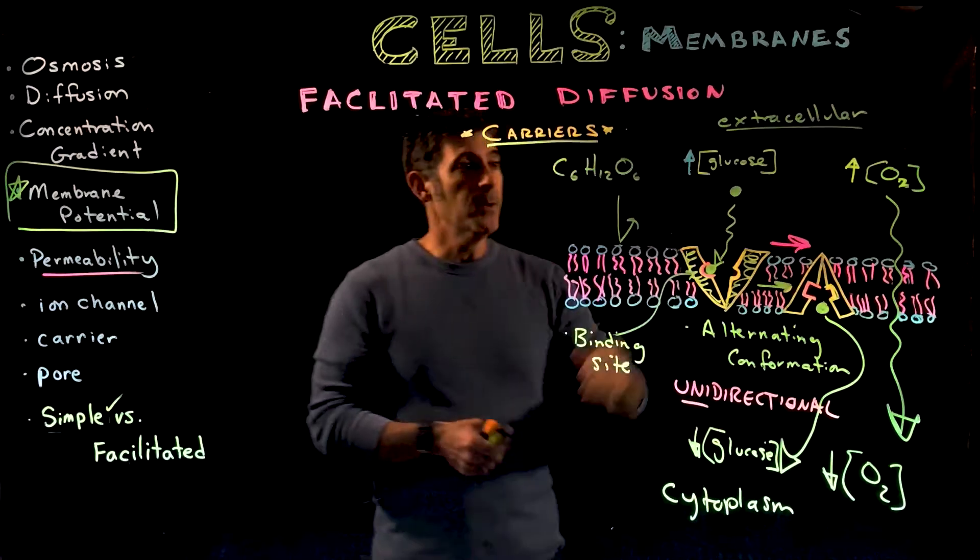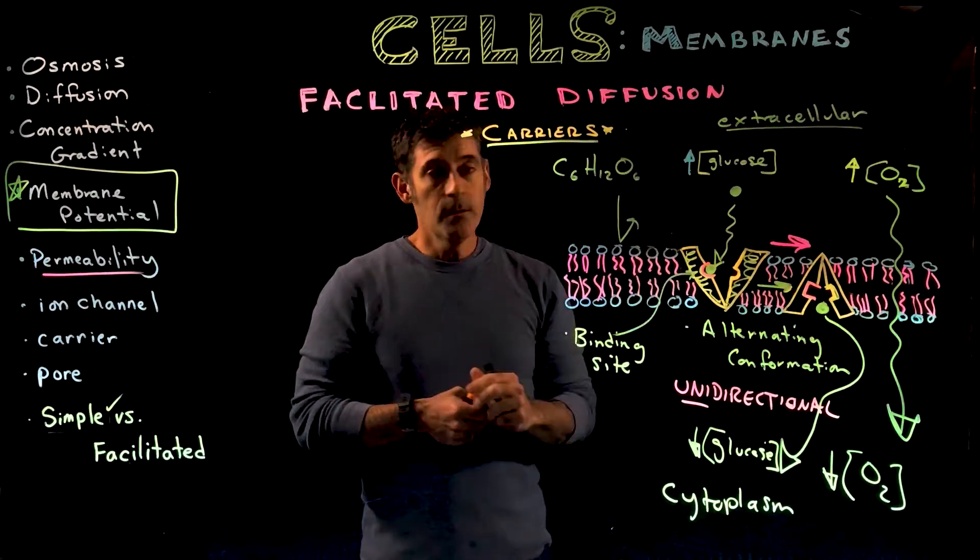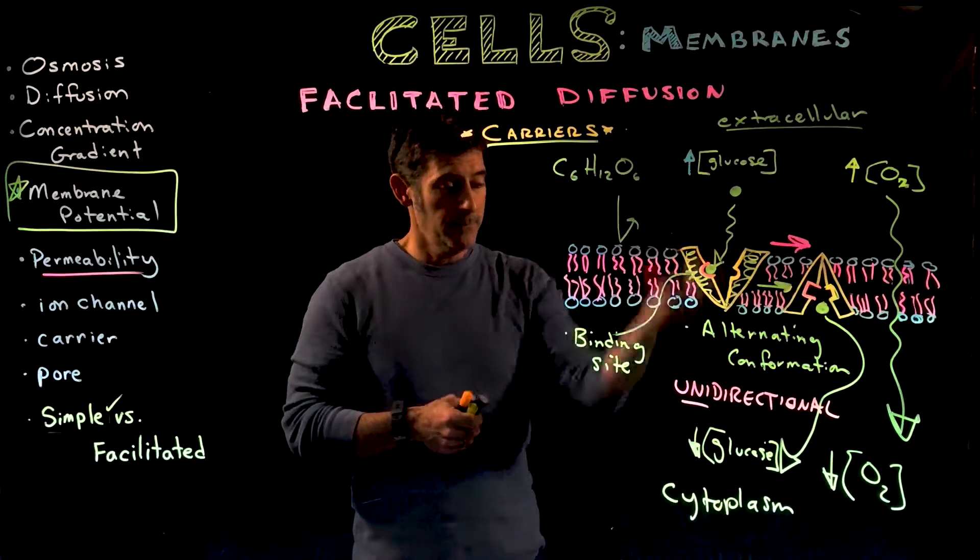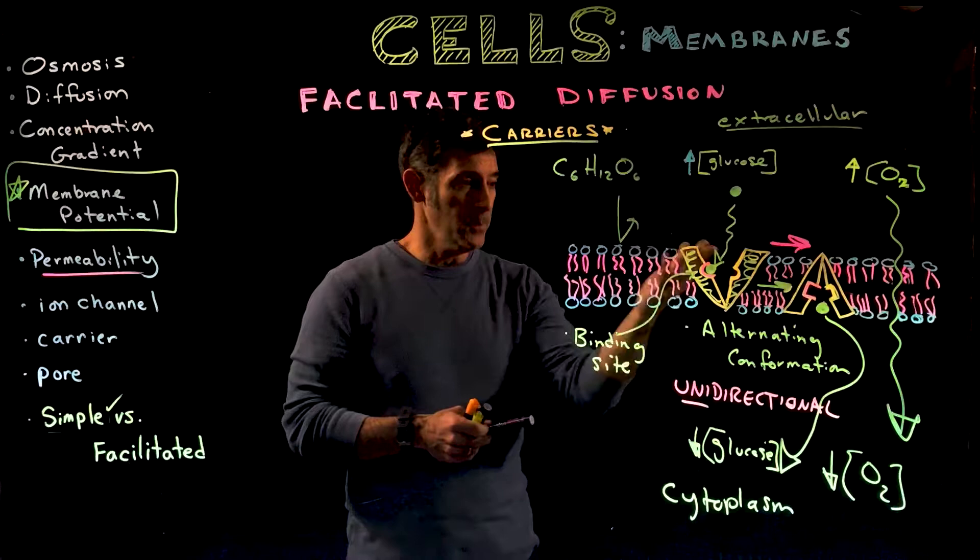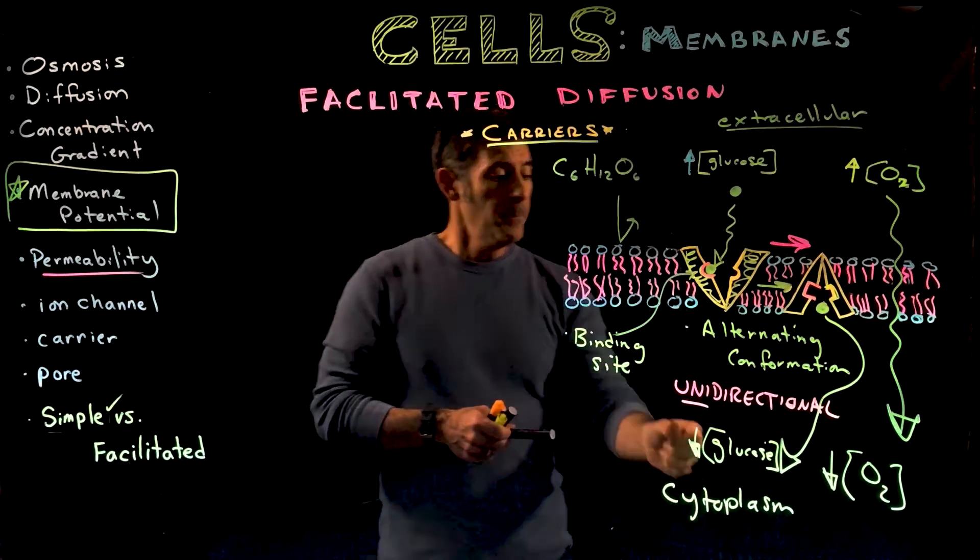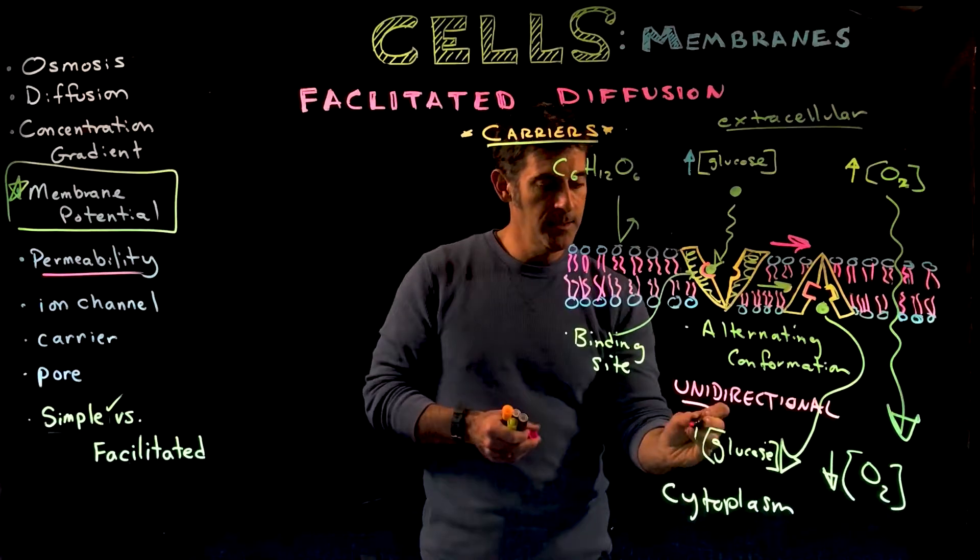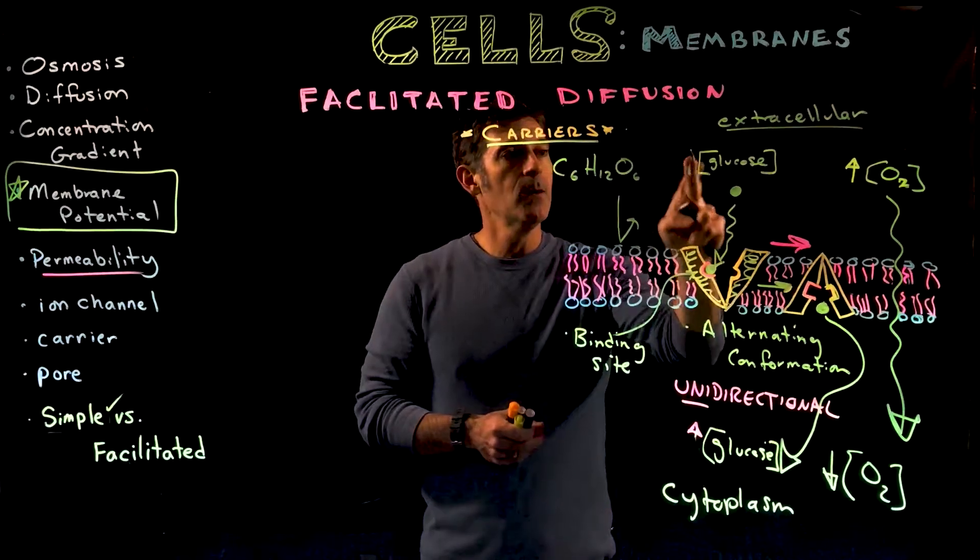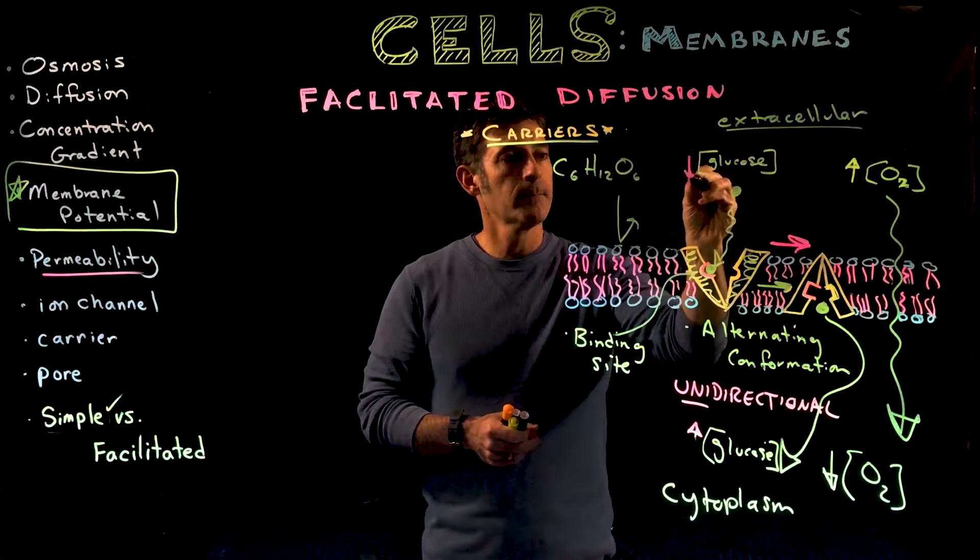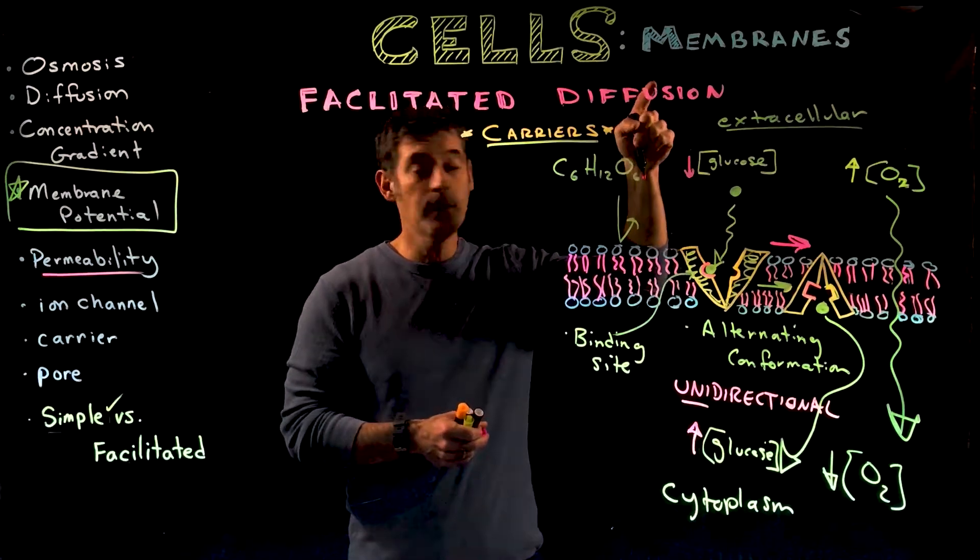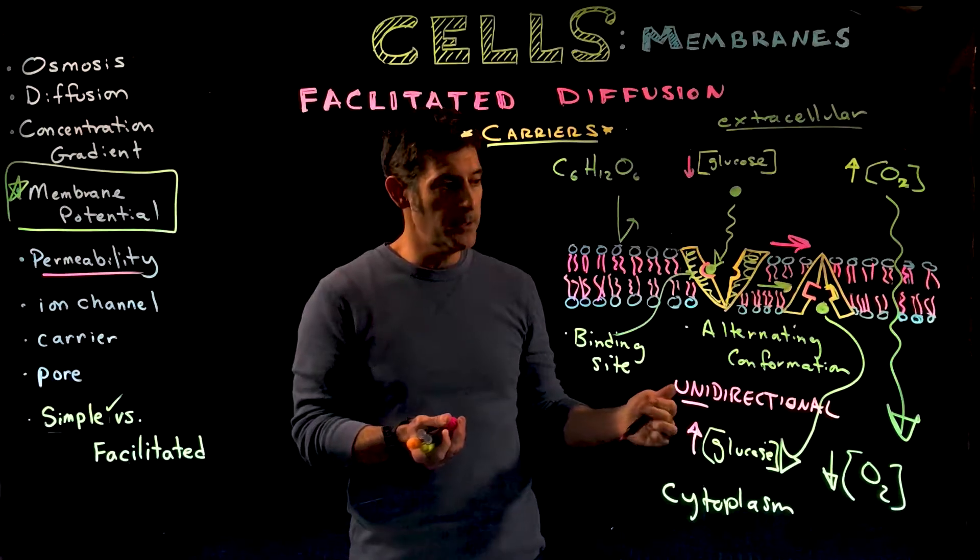For glucose, if the cell is using it for energy, it wants glucose to move into the cell from high to low concentration. But if over time the glucose concentration inside the cell built up and was really low outside, the tendency would be for glucose to move out, but the cell would not want to lose its glucose.